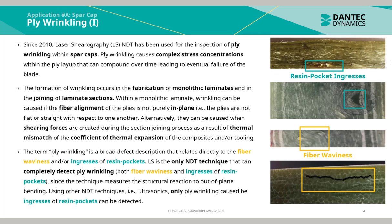The term ply wrinkling is a broad defect description that relates directly to fibre waviness and/or ingresses of resin pockets. Laser shearography is the only NDT technique that can completely detect ply wrinkling — both fibre waviness and ingresses of resin pockets — since the technique measures the structural reaction to out-of-plane bending. Using other NDT techniques, for example ultrasonics, only ply wrinkling caused by ingresses of resin pockets can be detected.